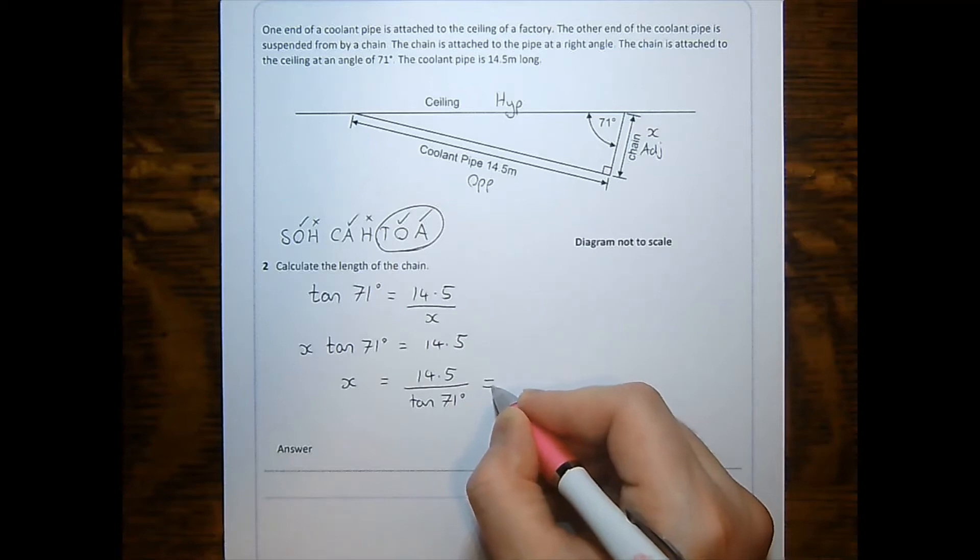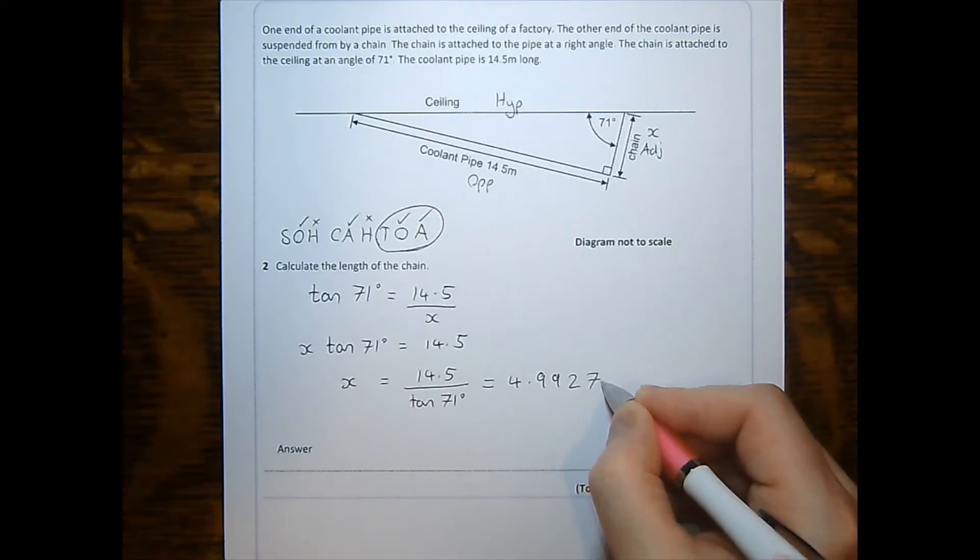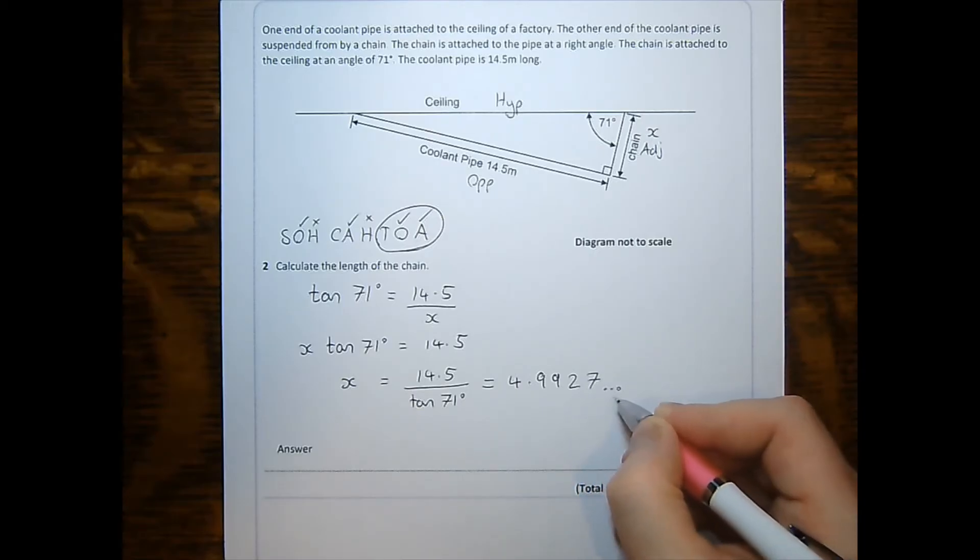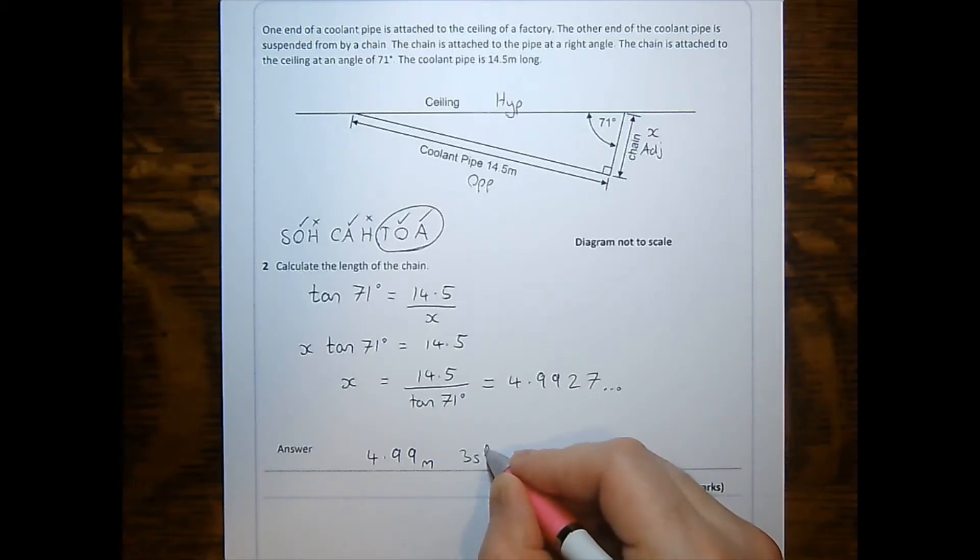With my calculator, that gives me 4.9927 etc. And this tells me that the chain is equal to 4.99 meters in length to three significant figures. It didn't specify how long to round, so I chose three significant figures and I stated my units.